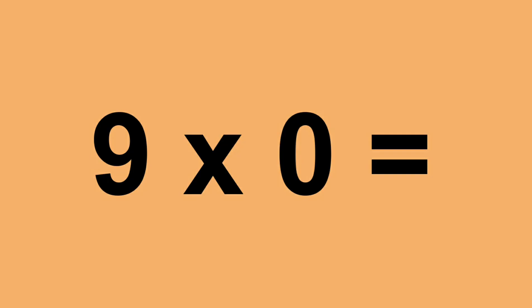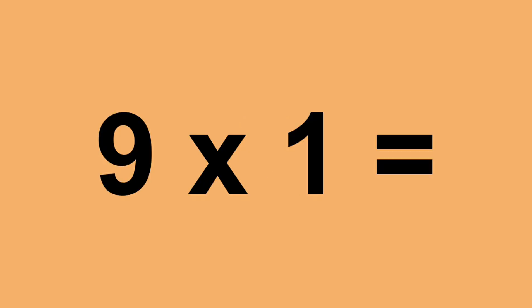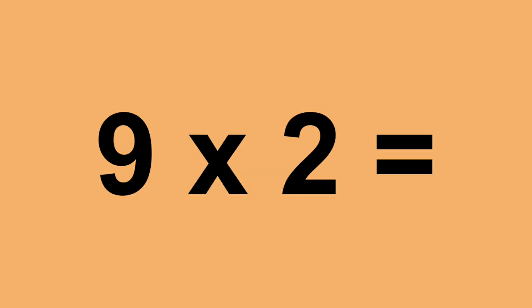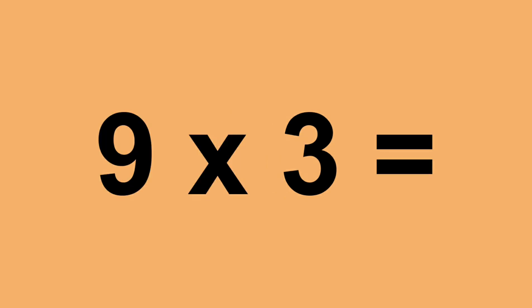9 times 0 equals 0. 9 times 1 equals 9. 9 times 2 equals 18. 9 times 3 equals 27.